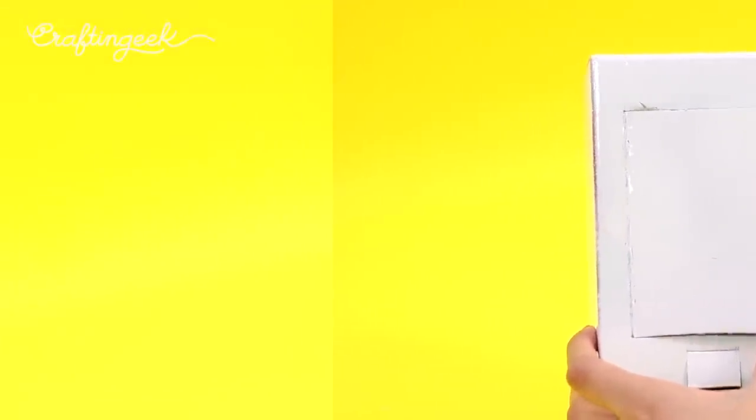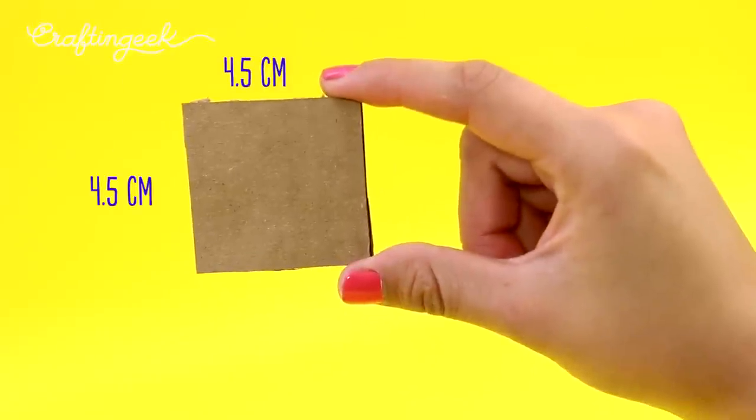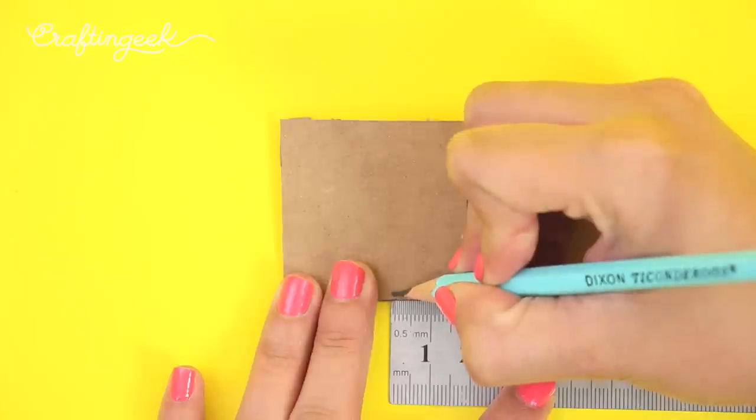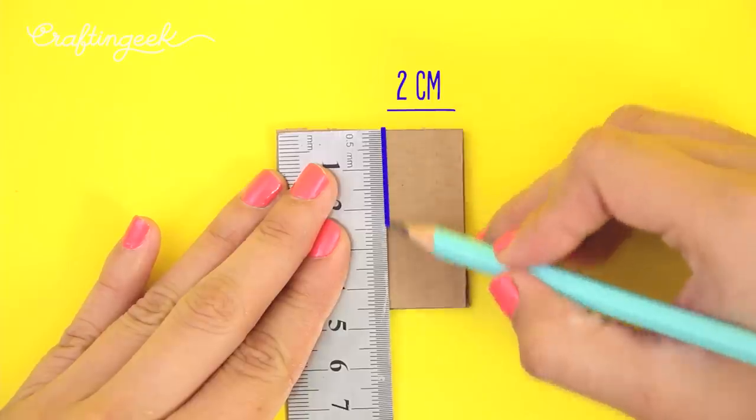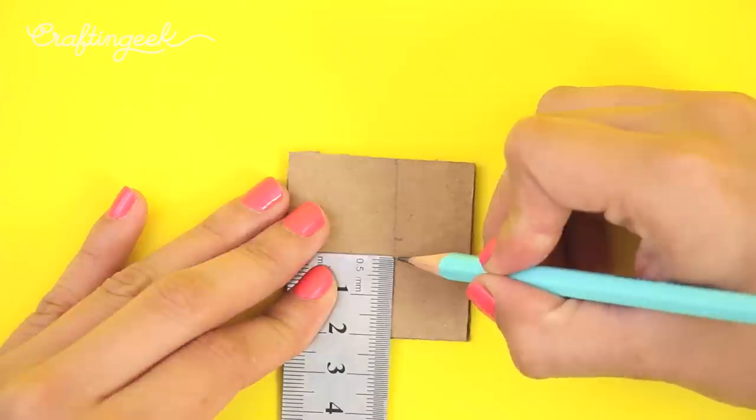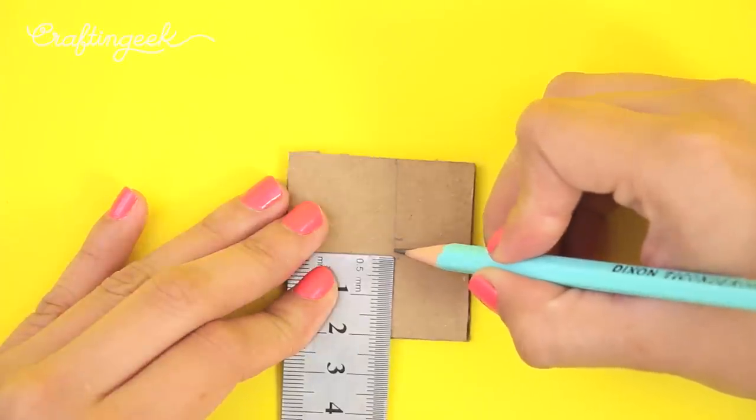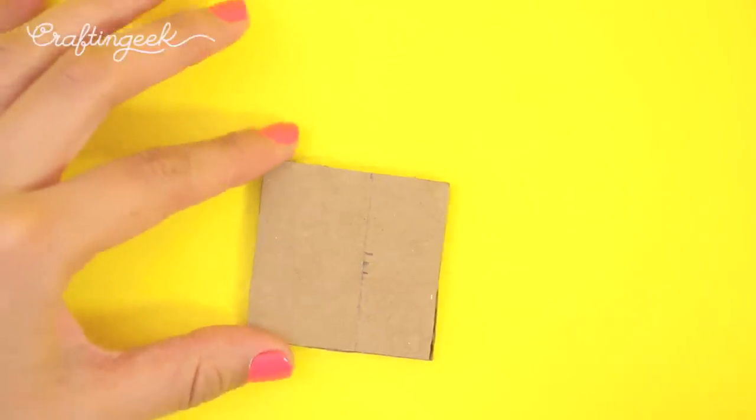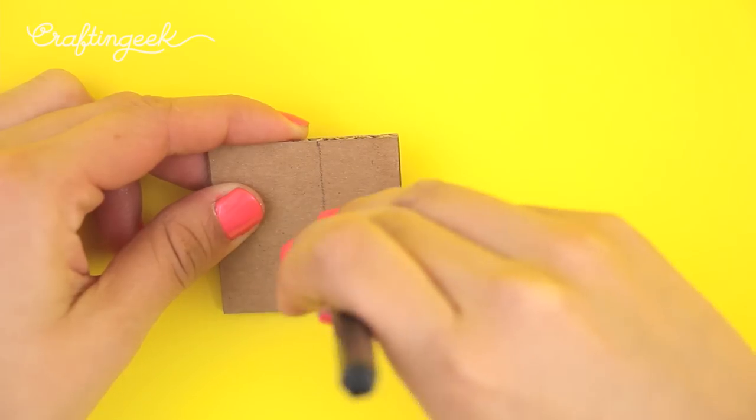We're also going to need a square that measures 4.5 centimeters by 4.5 centimeters in which we're going to draw a line at 2 centimeters from the right side. In the middle of that line we're going to draw a dot which is going to become a hole where a pencil or a small stick should fit in.